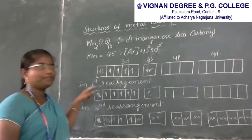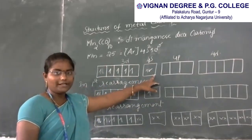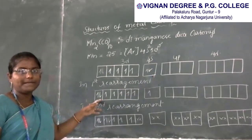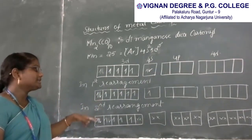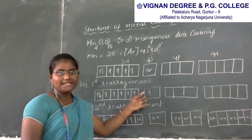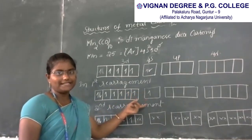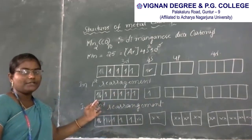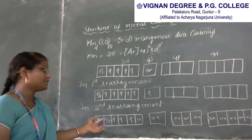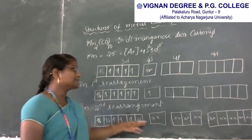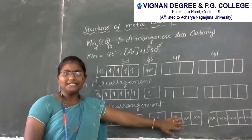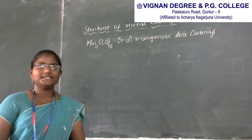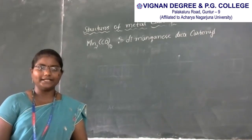In the first rearrangement of manganese, one electron from 4S is excited to 3D. In the second rearrangement, the remaining electron in 4S is also excited to 3D. Manganese then forms 10 equivalent vacant orbitals, and these 10 vacant orbitals form 10 CO bonds.